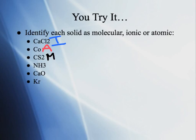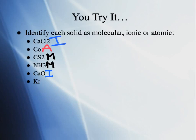NH3 has nitrogen and hydrogen, both nonmetals — molecular. CaO has calcium (metal) and oxygen (nonmetal) — ionic. Kr is just krypton, a single element — atomic. Those are pretty easy and straightforward once you know the categories.